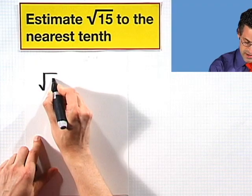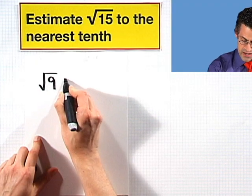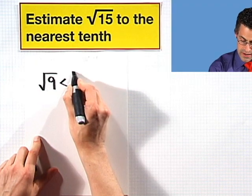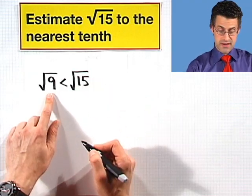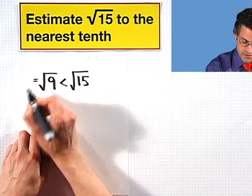I see that the square root of 9 is going to be smaller than the square root of 15. But the square root of 9 I can actually figure out, that actually equals 3.